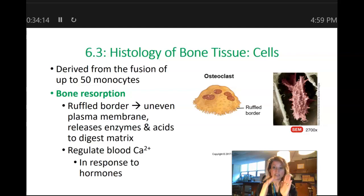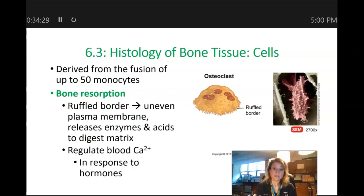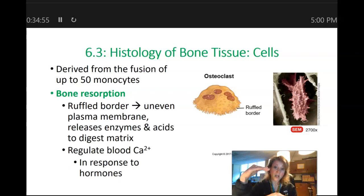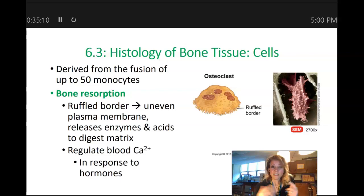Osteoclasts have a very interesting shape — they have something called a ruffled border, or uneven cell membrane — and from the cell membrane they secrete acids and enzymes that tear down the bone. As they shape the bone, they also release minerals from the bony matrix into the blood. If someone has low blood calcium, osteoclasts are going to be stimulated by various hormones — mainly PTH, or parathyroid hormone — to start breaking down bone to release calcium into the blood and bring that calcium level back to normal, helping to maintain homeostasis.